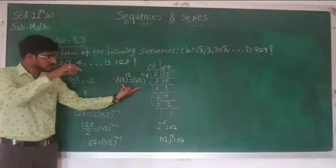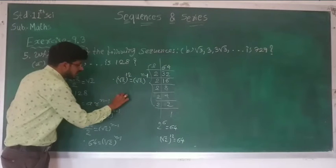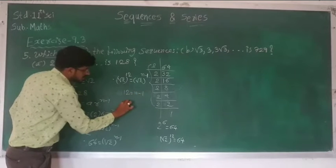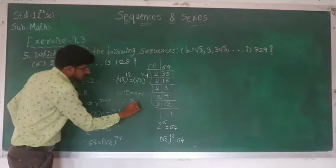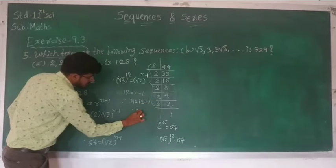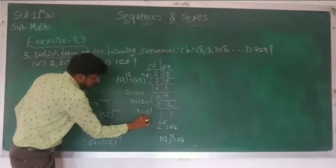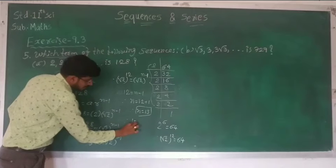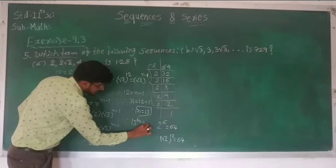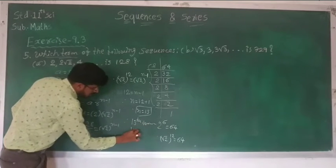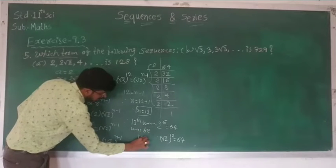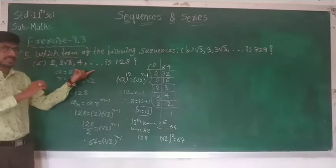Since the base is same, we get 12 is equal to n minus 1. Therefore the value of n is equal to 12 plus 1, which is 13. It means the 13th term will be 128 of the given GP.